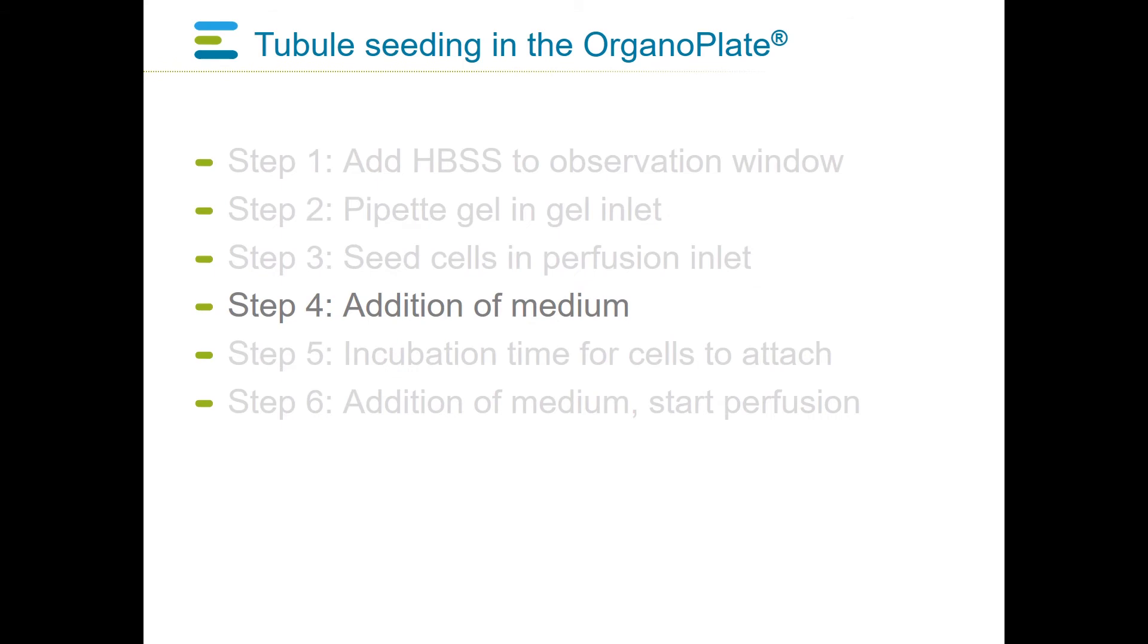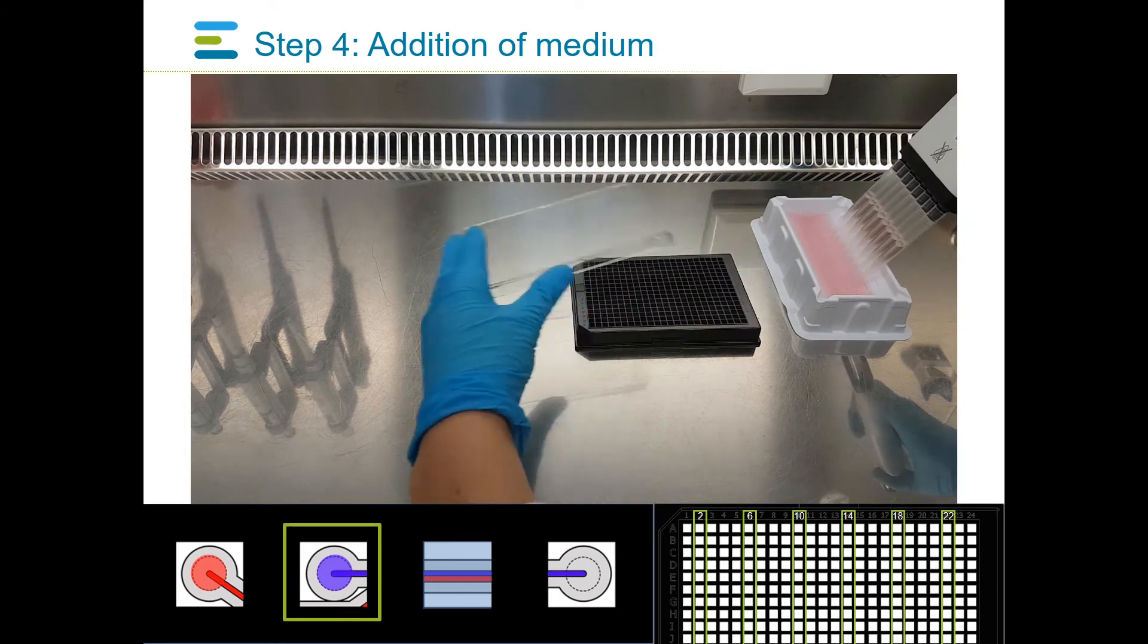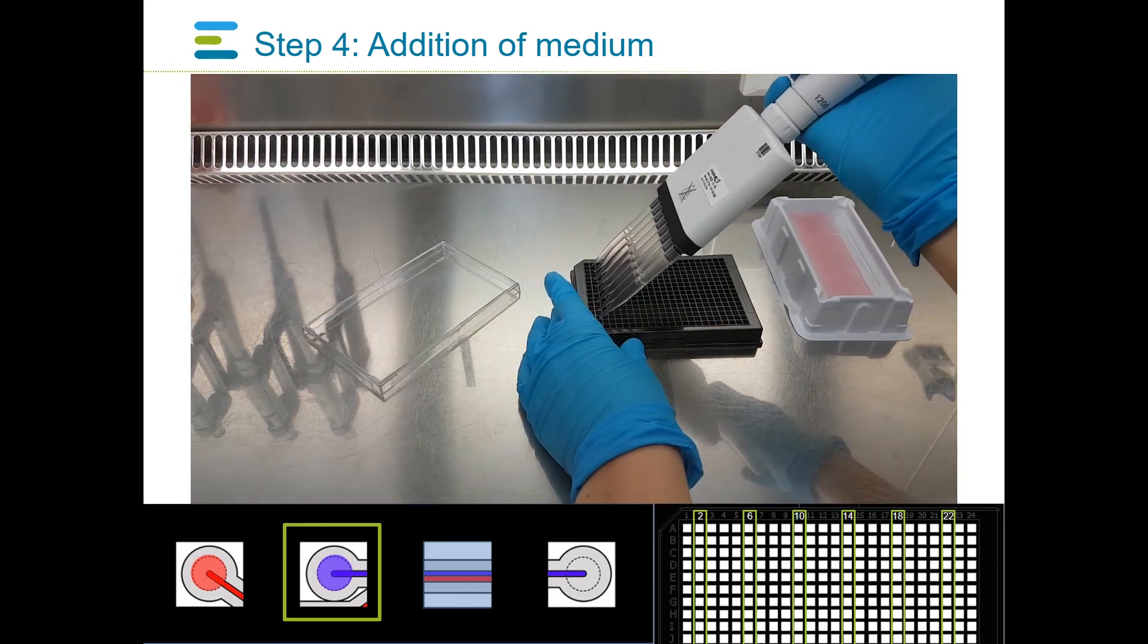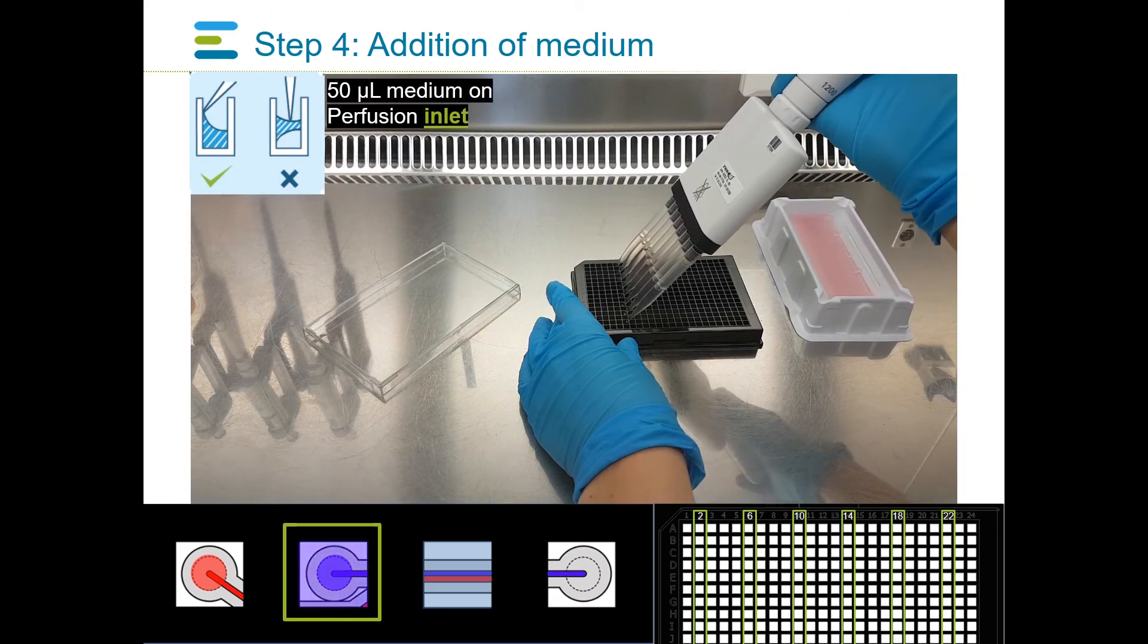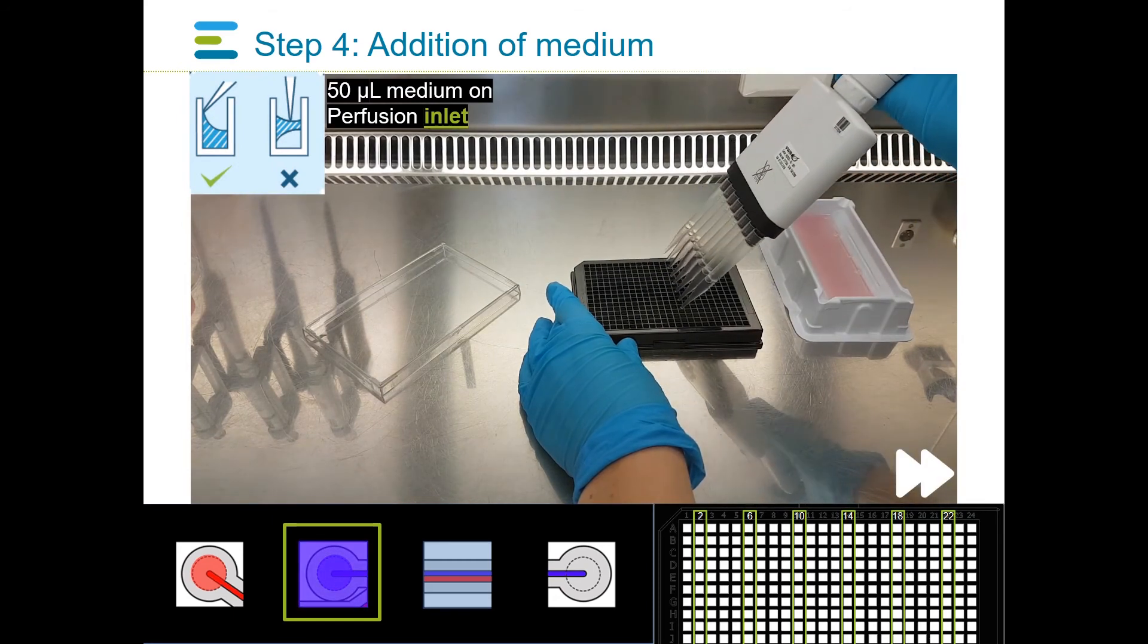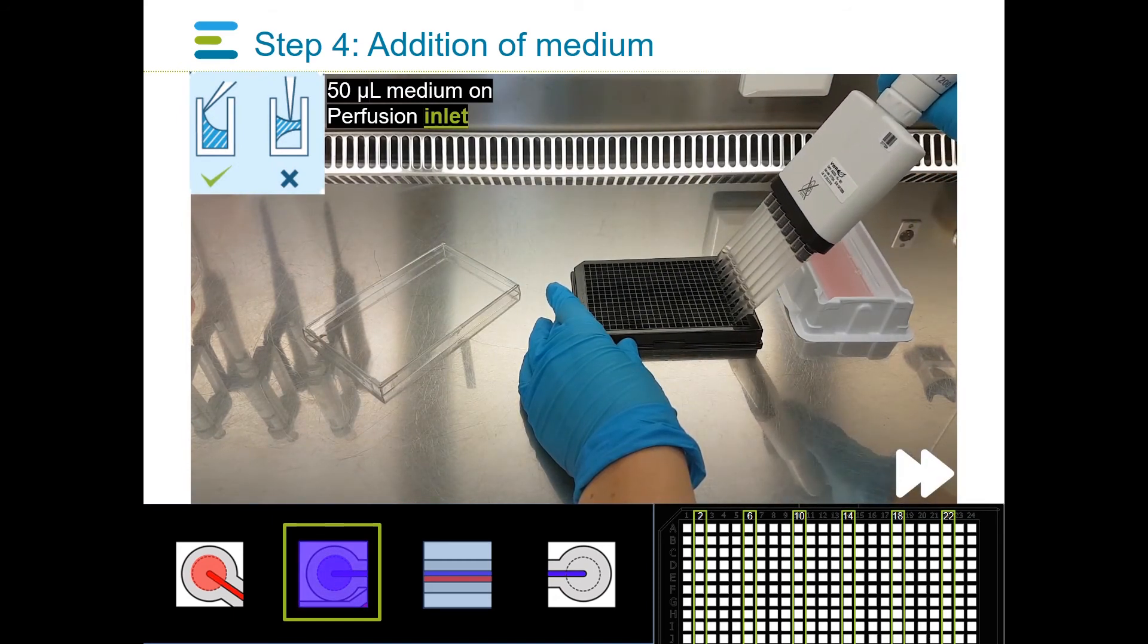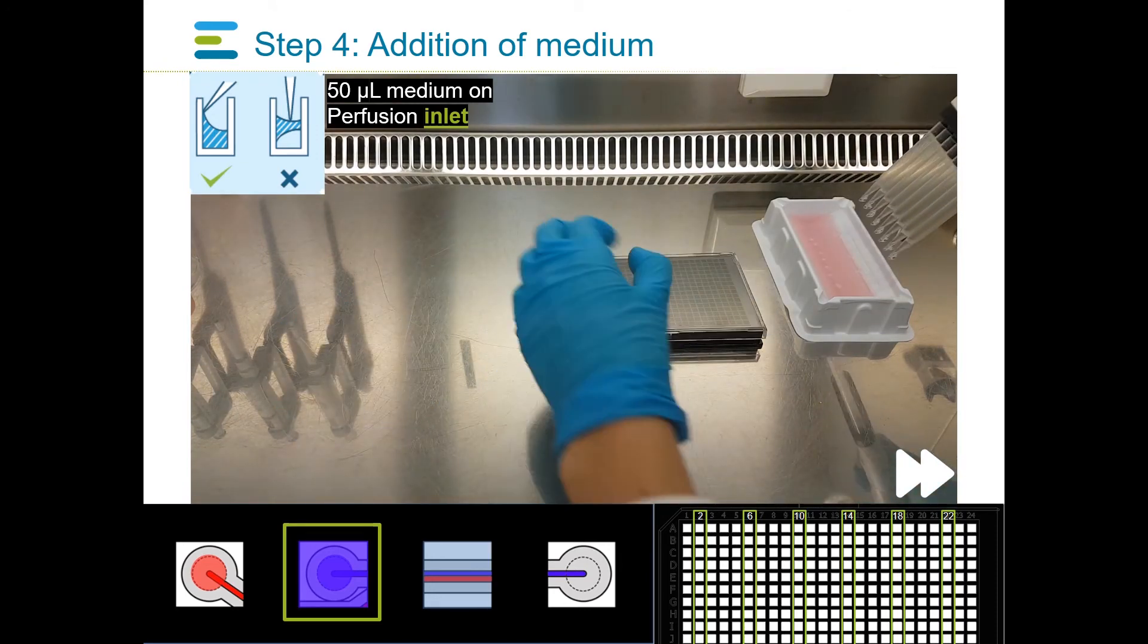In step four, medium is added to the cells. Using a multi-channel pipette and aseptic techniques, add 50 microliters of medium to the medium inlet of columns 2, 6, 10, 14, 18, and 22. Pipette the medium against the wall of the microtiter plate to avoid trapping bubbles.